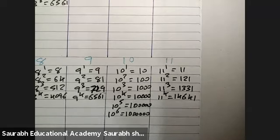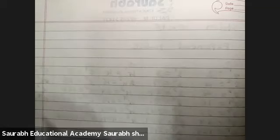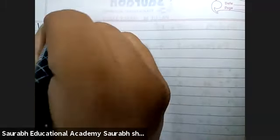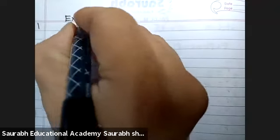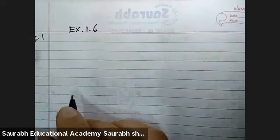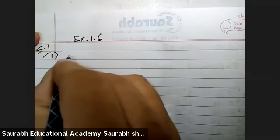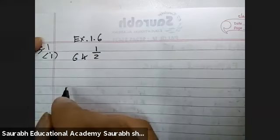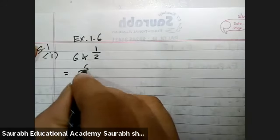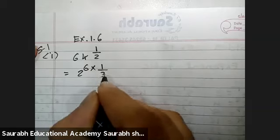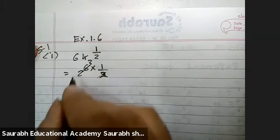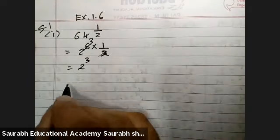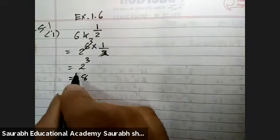Clear everyone? Sum number 1, Exercise 1.6. First equation: 64 raise to 1 by 2. Now 64 means 2 raise to 6, into 1 by 2. The 2 and 6 give exponent 3, so 2 raise to 3 — the answer is 8.